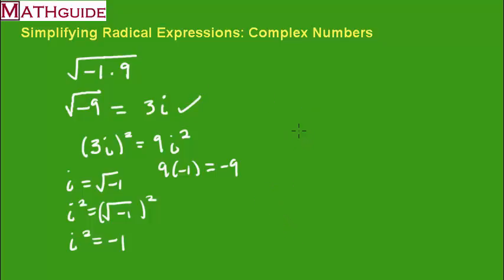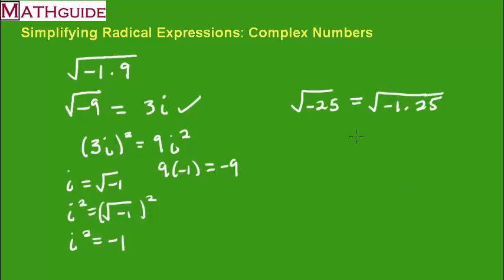Let's try that again with another problem — the square root of negative 25. This is really negative 1 times 25. The square root of negative 1 is i, and the square root of 25 is 5. So your answer is 5i.